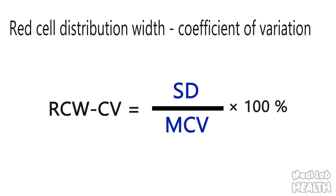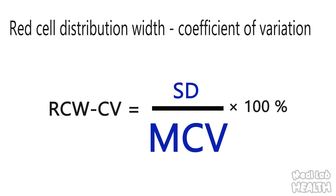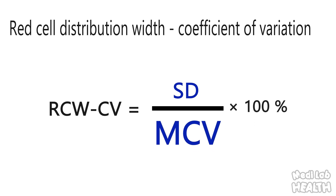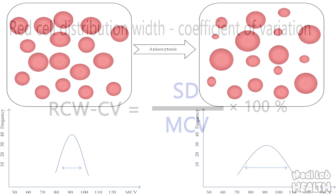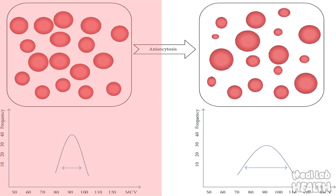Because it is a calculation, the RDW-CV is dependent not only on the width of the distribution curve but also the MCV of the red cell population, and may not always reflect the actual variation in red cell size. Therefore, keep in mind that a homogeneous population of red cells with a narrow distribution curve and low MCV may have an elevated RDW-CV, and a heterogeneous population with a broad distribution curve and high MCV may have a normal RDW-CV.